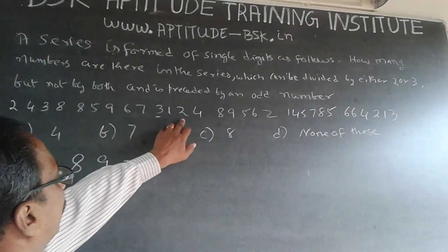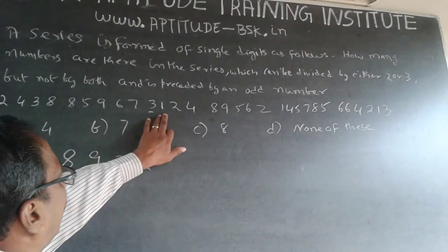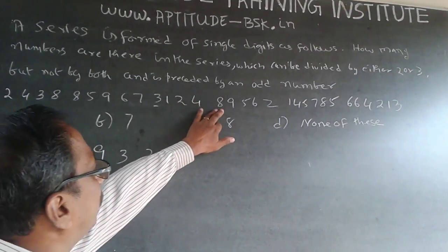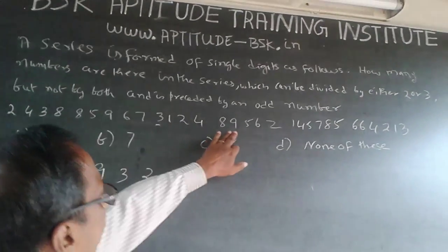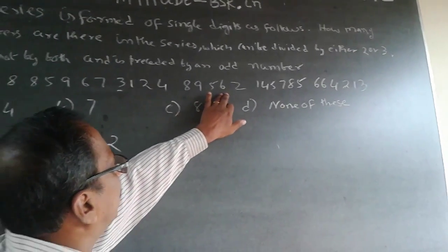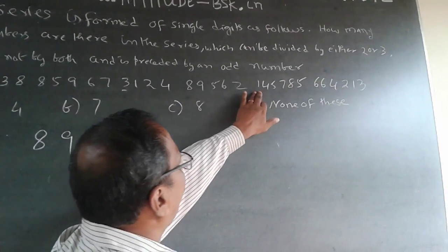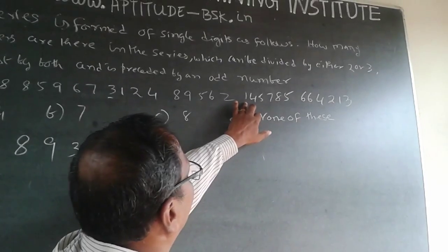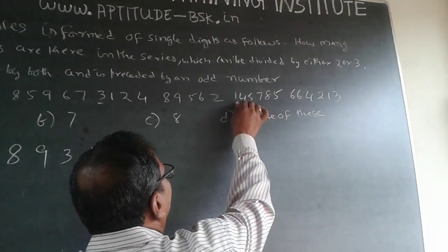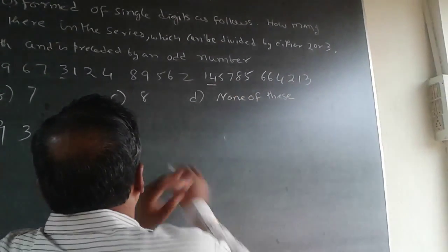Then 1 is ruled out. 2 is possible because it is divisible by 2 and the preceding number is an odd number — so 2 qualifies. 4 is divisible by 2 but the preceding number is even. 8 is divisible by 2 but the preceding number is even. 9 is divisible by... the preceding number is even. 5 ruled out. 6 ruled out. 2 — preceding number is even. 1 ruled out. 4 — preceding number is an odd number, so 4 is possible. Then 8 — preceding number is an odd number, so 8 also qualifies.